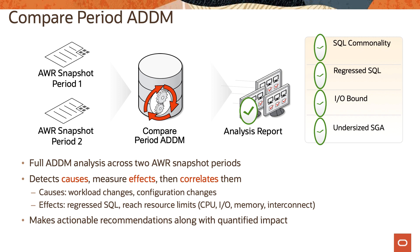Compare Period ADDM allows you to see analysis across two AWR snapshot periods. It helps detect the cause, measure the effect, and provides correlation. You can see any workload changes or configuration changes and their effect through regressed SQLs, and you can take actions based on these compare period reports. It allows automatic comparison of two periods to determine what has changed and provides a valuable mechanism for quick performance troubleshooting.